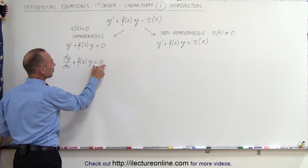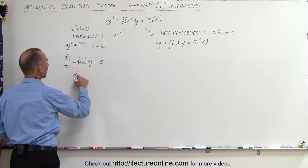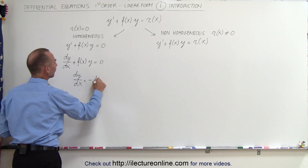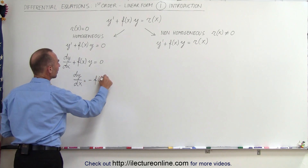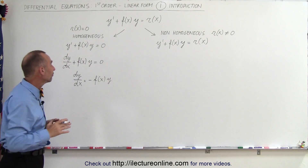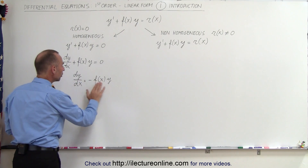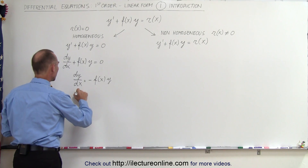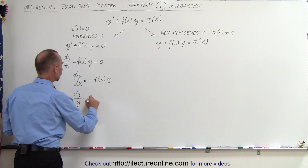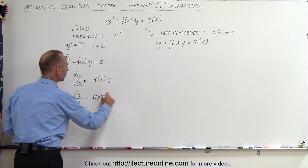We take the function-of-x term and move it to the right side of the equal sign, so this becomes dy/dx equals the negative of the function of x times y. We then perform separation of variables, putting all the y's on the left side and all the x's on the right side, giving us dy divided by y equals minus f(x) times dx.